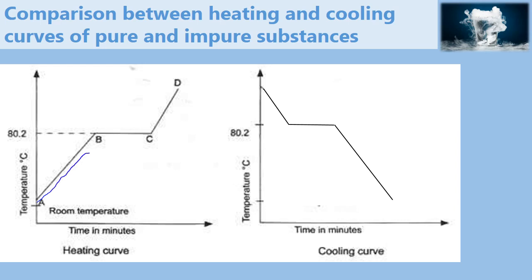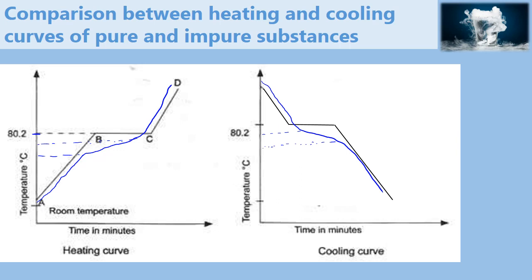The heating curve of impure naphthalene would look something like this, and the cooling curve will be something like this. This shows that the melting point of the impure naphthalene is a range of temperature below the actual melting point. Similarly, the freezing point is also a range of temperature below the actual freezing point.